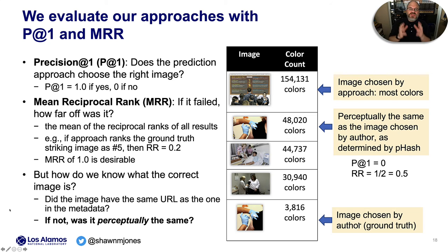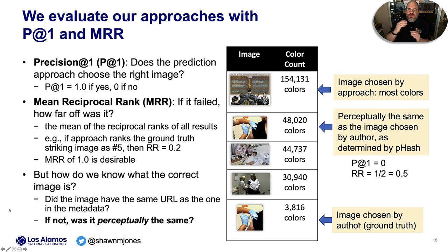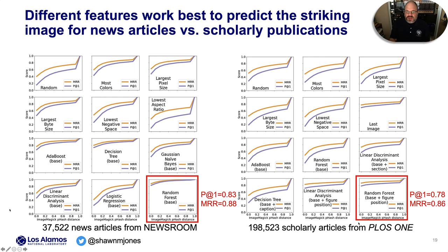We evaluate our approaches with precision at 1 and mean reciprocal rank. Precision at 1 answers: does the prediction approach choose the right image? Mean reciprocal rank answers: if it failed, how far off was it? Using color count, the approach chose the man in front of the brown menu, but the correct image was the fifth one chosen by the author. We use the phash method to evaluate perceptually similar images. We found that random forest with base features produces the correct image 83% of the time for news articles, and random forest with base features plus figure position produces the correct image 78% of the time for scholarly articles.